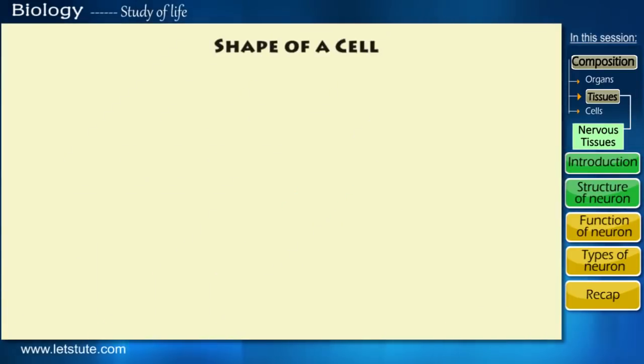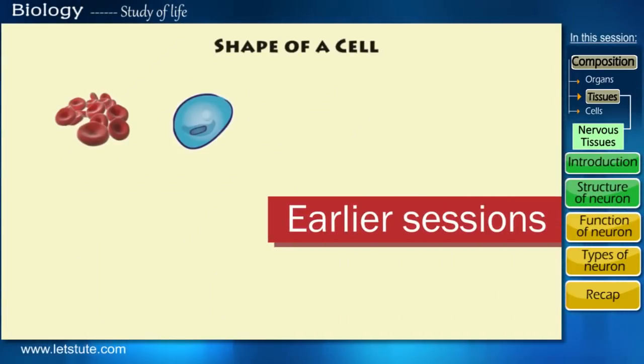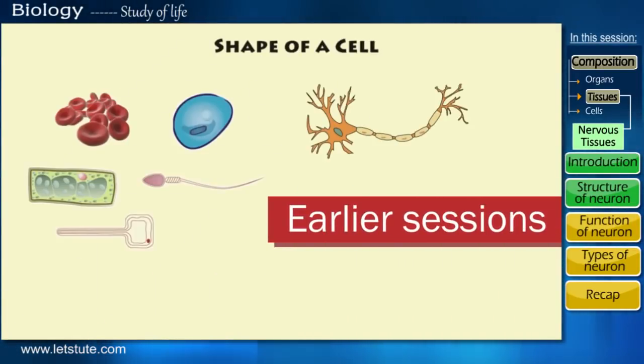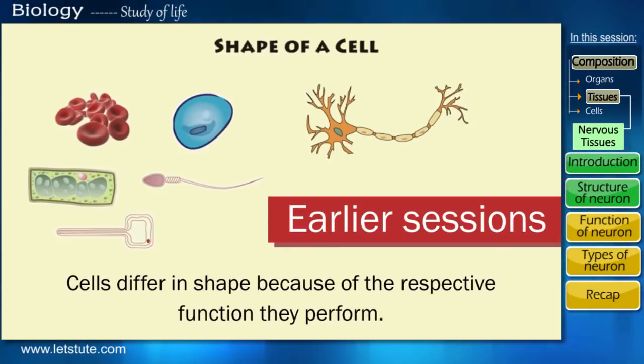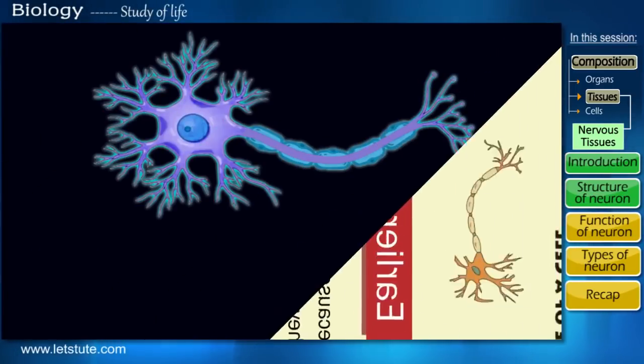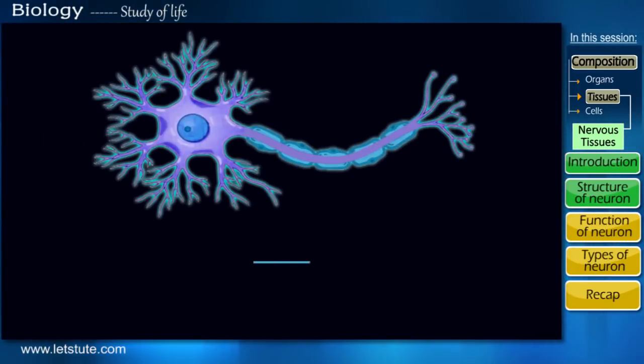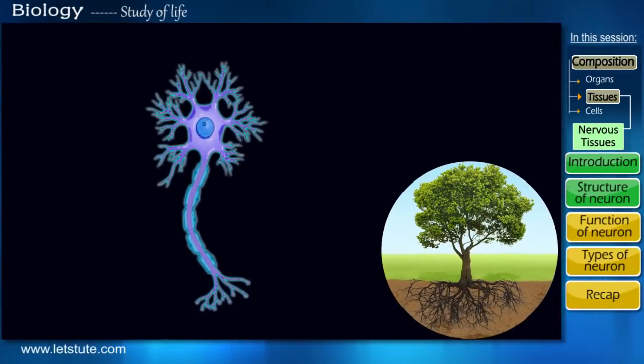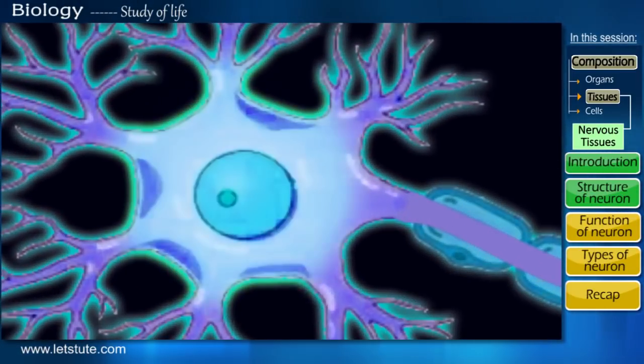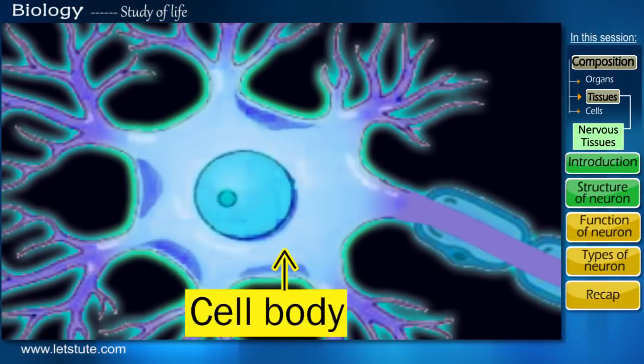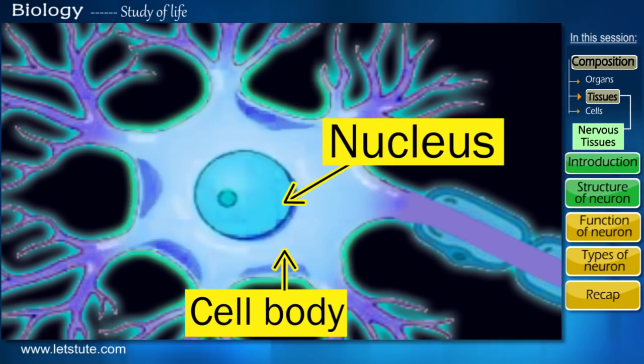We spoke about cells with different shapes in our earlier sessions. All those cells are differently shaped because of the respective function they perform. So this cell in the nerve fiber is elongated in shape. It kind of resembles a tree. This topmost spread out portion that you see is the cell body where lies the nucleus of the cell.